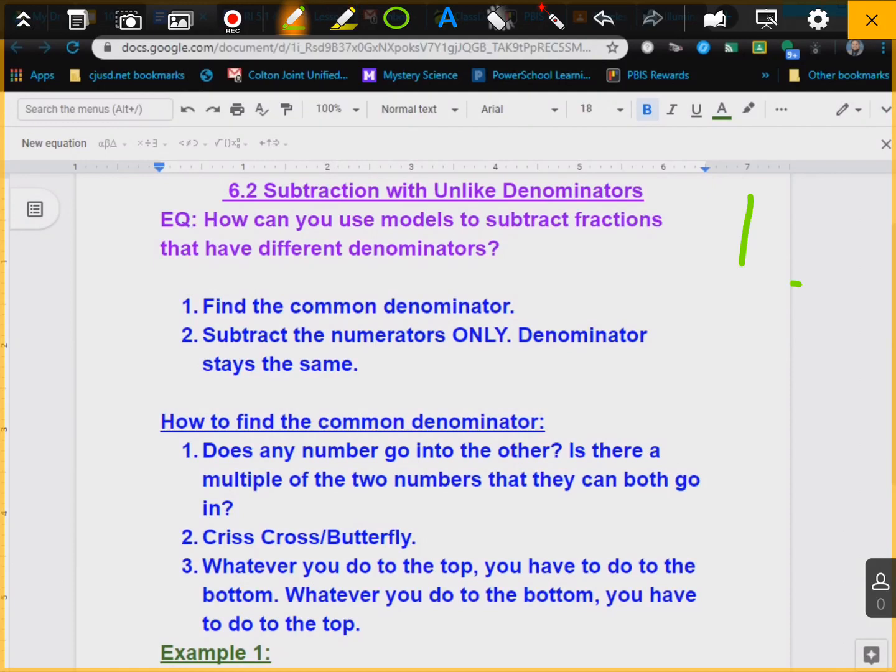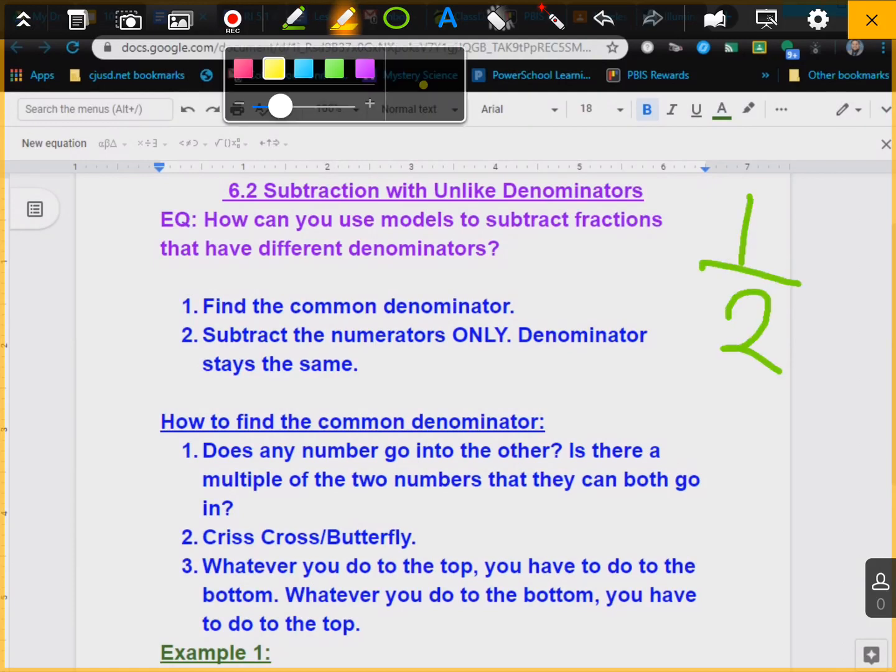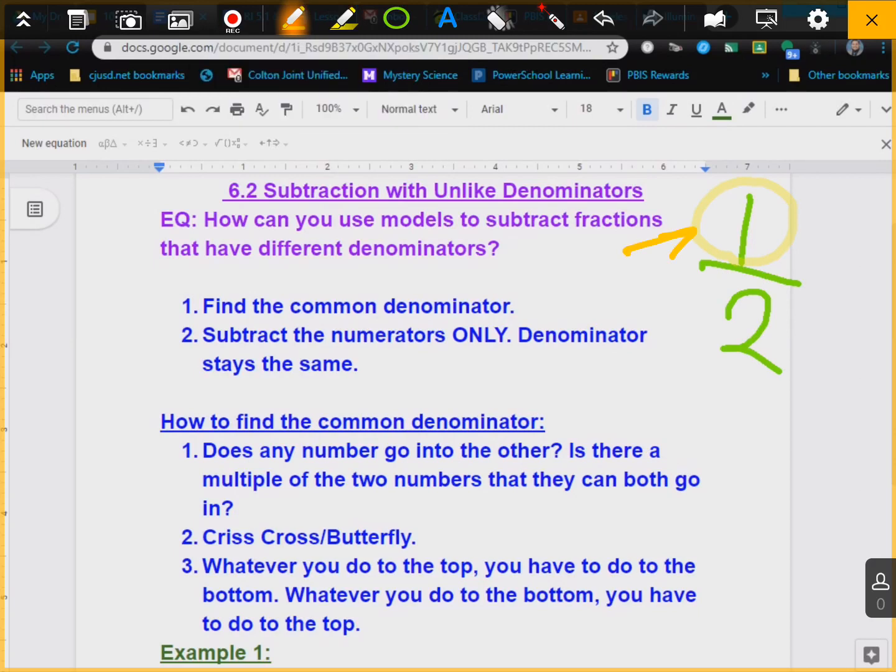If I have 1 half, the 1 here is the numerator. I'll put an N for that. Let me get a little bit neater than that though. And then the 2 here is the denominator. So that's the difference between the two. So the denominator, that's this one, stays the same.